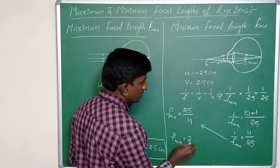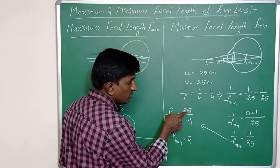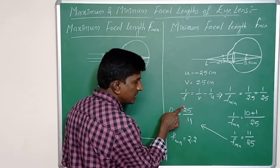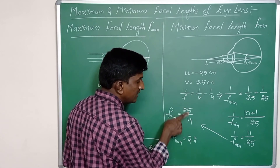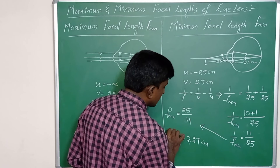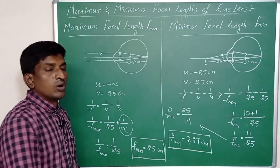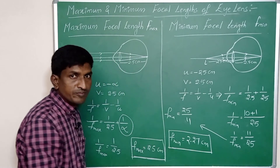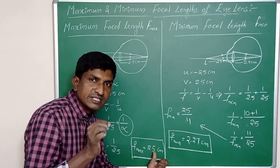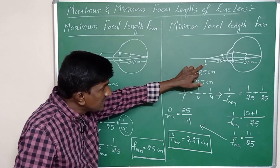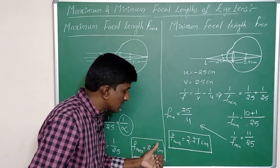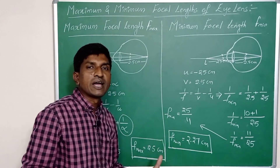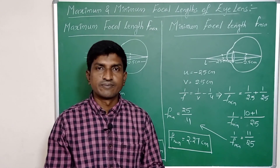Calculating 25 divided by 11 gives approximately 2.27 centimeters. This is the minimum focal length of the eye lens. In between minimum and maximum: as the distance of the object changes from infinite to the least distance of distinct vision, the value of the focal length also changes — from maximum 2.5 centimeters to minimum 2.27 centimeters. This is the explanation of maximum and minimum focal length of the eye lens. Thank you.